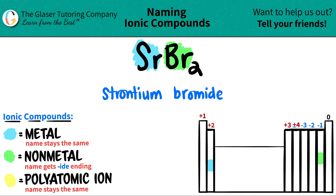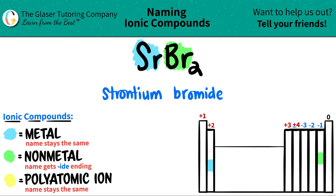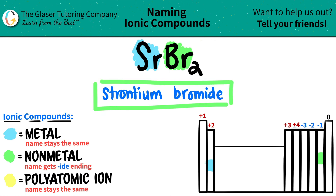Do I need a Roman numeral here? The Roman numeral is only for transition metals. Group two — strontium in this case — is not a transition metal. It's not in that block. Therefore, I don't need a Roman numeral. So we're done. SrBr₂ is just strontium bromide.